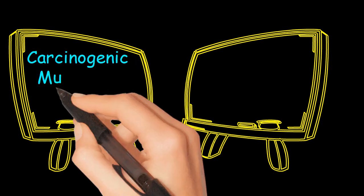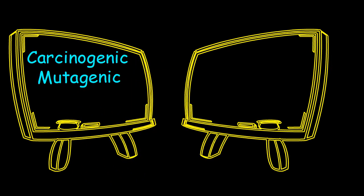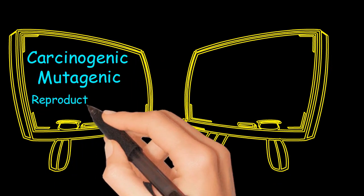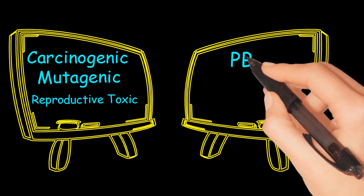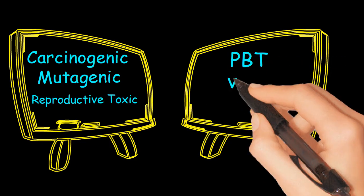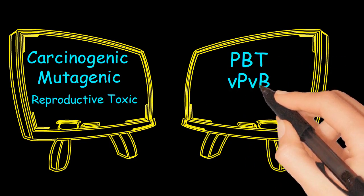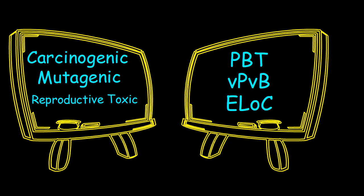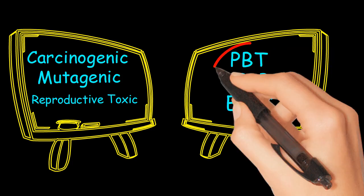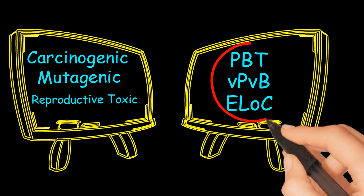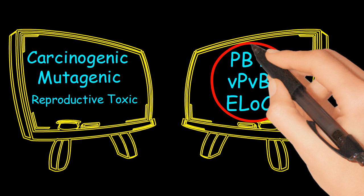These six groups are: Carcinogenic, Mutagenic, Reproductive Toxic, PBT, VPVB, and ELOC. We have already discussed carcinogenic, mutagenic, and reproductive toxic in a separate video. Now let's discuss PBT, VPVB, and ELOC.